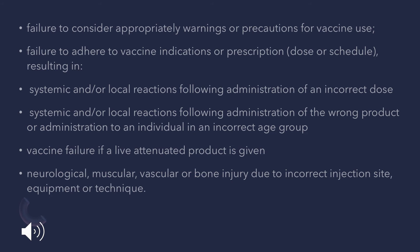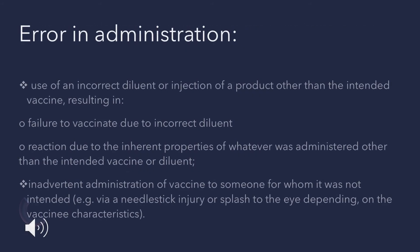If the vaccine contains a live attenuated product and is given incorrectly at the wrong site, using wrong equipment or a different technique, it may cause neurological, muscular, vascular, or bone injury. Errors in administration include using an incorrect diluent or injecting a product other than the intended vaccine, which may cause vaccine failure or a reaction due to the properties of whatever was administered. Adding a wrong diluent may also cause ADRs.